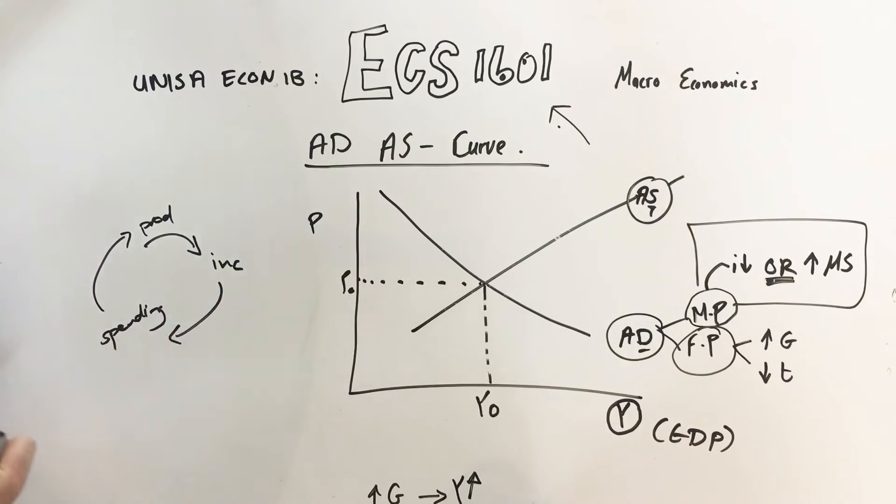Same if taxes go down. Remember we said it's a leakage, so when taxes go down there will be more money, which means Y will increase. The other thing is the interest rate. If the interest rate goes down, our investment spending will go up. If interest rates go down, investment spending will go up, and this in turn will influence output.